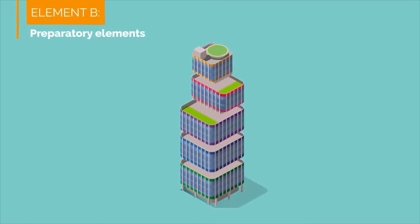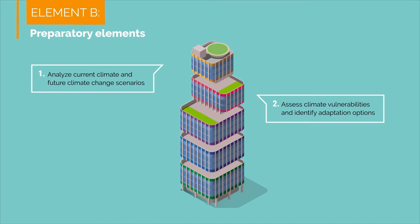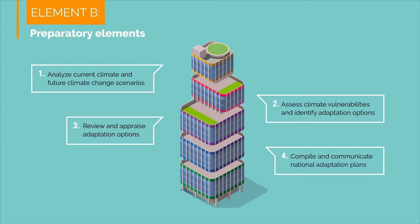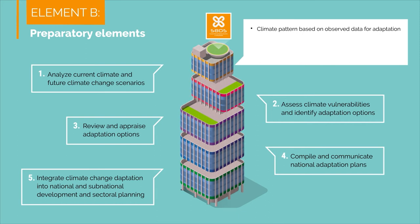The proposed steps in Element B are: analyze current climate and future climate change scenarios; assess climate vulnerabilities and identify adaptation options; review and appraise adaptation options; compile and communicate national adaptation plans; and integrate climate change adaptation into national and sub-national development and sectoral planning. In Element B, the S8 Downscaler will help provide important climate patterns based on observed data for adaptation of social systems, understand climate vulnerabilities and impacts in different sectors, and provide cost-benefit analysis to understand viable, cost-effective options.